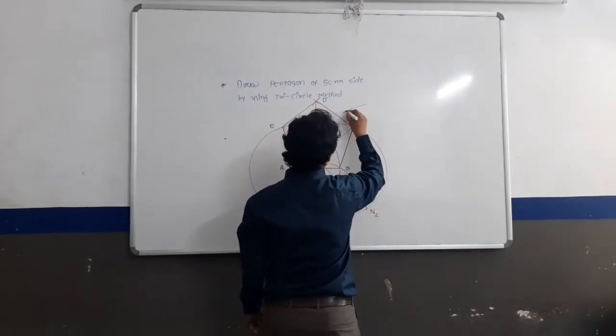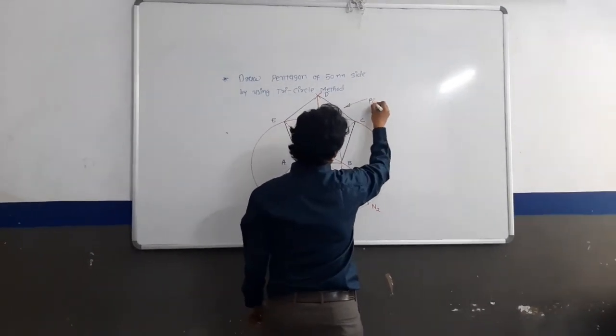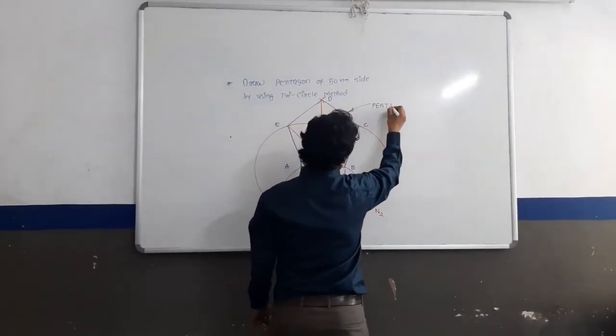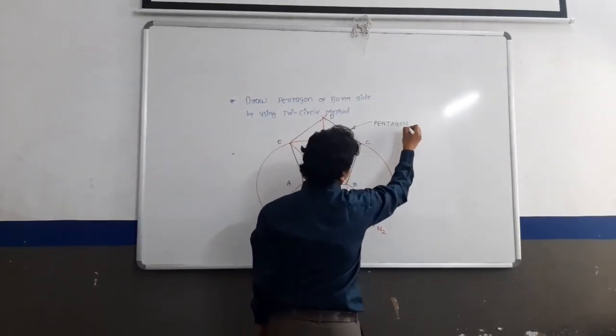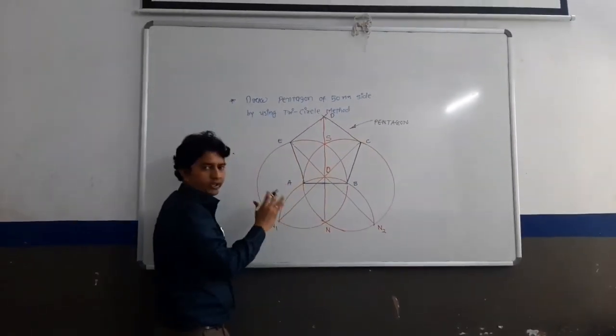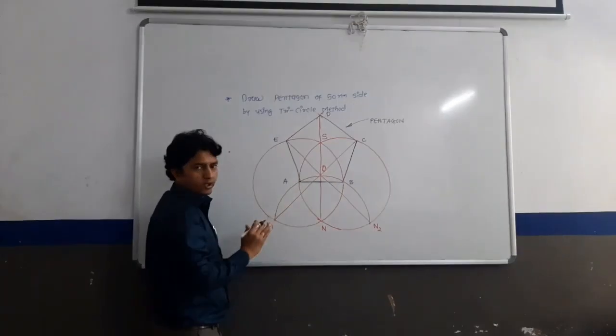This is what is called pentagon. Pentagon has five number of sides. The rest of the drawing should be light.